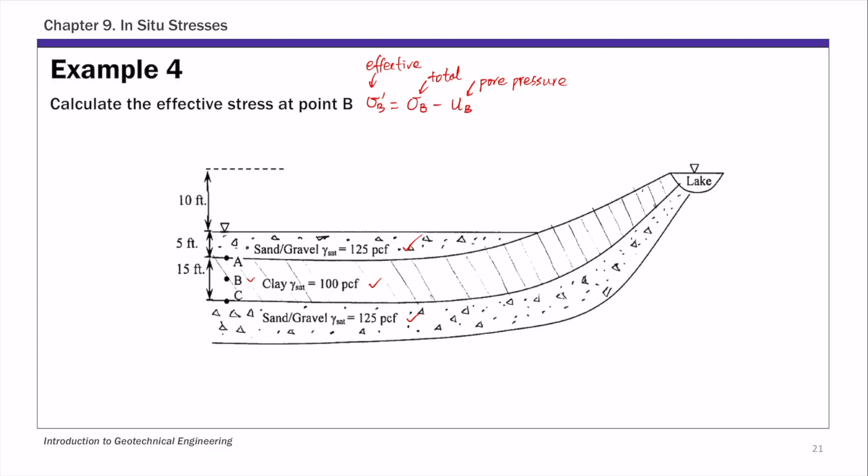The total stress is very easy to calculate. Sigma B is the total weight of soil above this point. We have the groundwater table and we know the saturated unit weight of the sand layer on top and the saturated unit weight of the clay. This total weight is five feet of gamma saturated sand, plus since point B is at the middle of the clay layer, one half of that 15. So we have 7.5 feet of clay above point B, times gamma saturated clay.